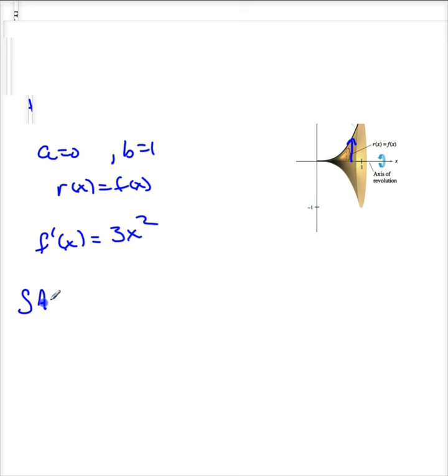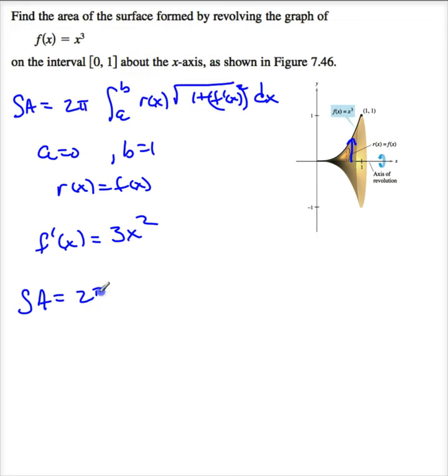So the surface area is 2π, the integral from 0 to 1, r is f(x), so that's x³, times the square root of 1 plus f' squared, so this is (3x²)² dx.